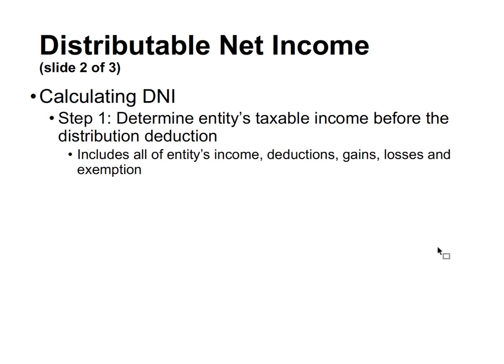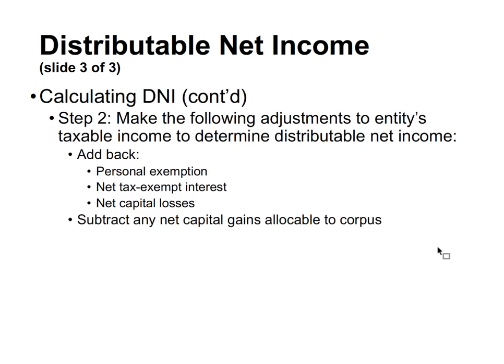To calculate DNI, first determine the entity's taxable income before the distribution deduction — this includes all the entity's income, deductions, gains and losses, and also includes the personal exemption. Then in step two, make the following adjustments: add back the personal exemption, add back net tax-exempt interest, and add back net capital losses. Then subtract any net capital gains that are allocable to corpus.